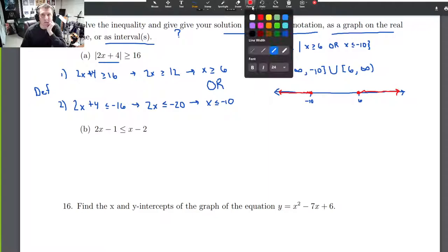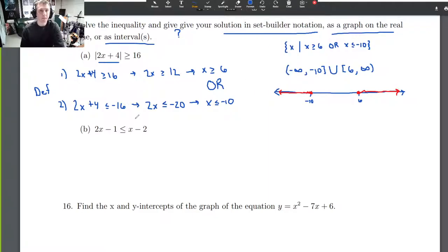Next problem is 15b. Again, we're just solving and giving the answer in one of the three notations. 2x - 1 is less than or equal to x - 2. We're going to isolate the x's. Let's bring all the constants to the right side and all the x's to the left side. So 2x - x is just x. We'll subtract that x to the left side, then add one to the other side. -2 + 1 is -1. And that's it.